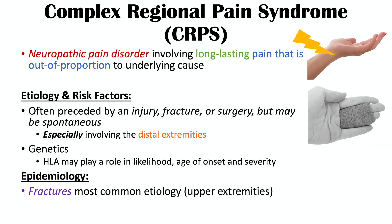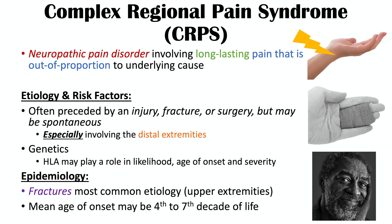Fractures are often going to be of the upper extremity — the hand, wrist, or forearm — as those are some of the most common areas affected. The mean age of onset is often later in life, oftentimes between the fourth to seventh decade of life.